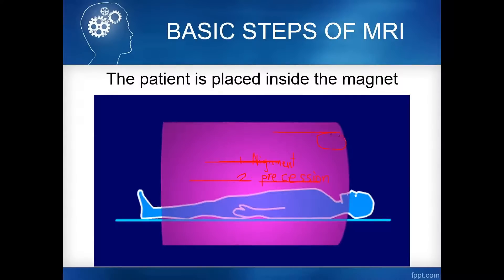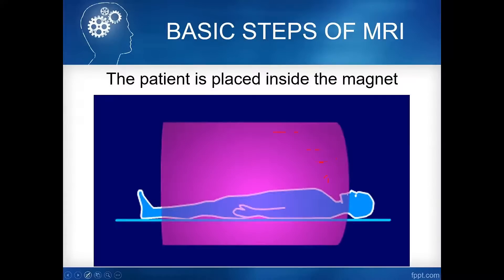For example, the hydrogen proton moves like a spinning top — that is precession, also called wobbling. This happens in the first step of the MRI process: exposure to the external magnetic field.